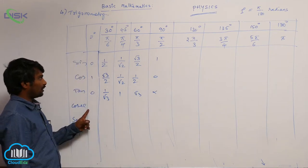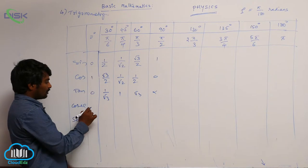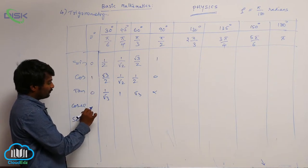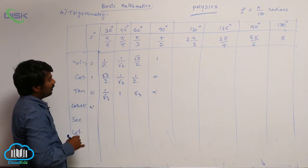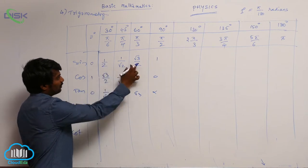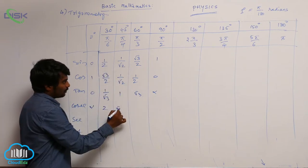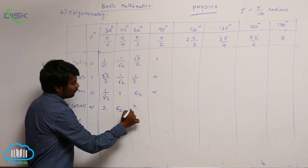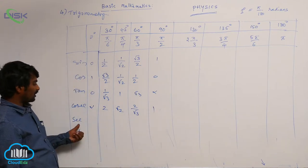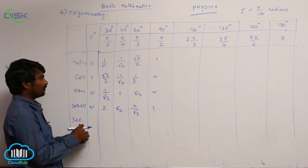Cosecant theta is 1 by sin theta. So for 0 degrees it is 1 by 0, which is undefined. Then the values are reciprocals: 2, root 2, 2 by root 3, and 1.